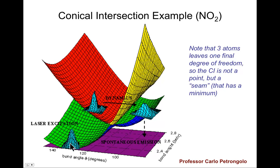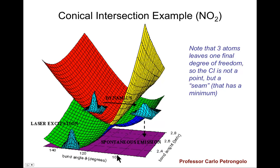If you imagine a system sitting on the ground state — this could be a vibrational wave packet sampling certain bend angles — and you excite it, so it absorbs a photon and jumps up to this excited state, it then rolls downhill, because the excited state has an equilibrium bond angle that is more bent — a smaller angle.